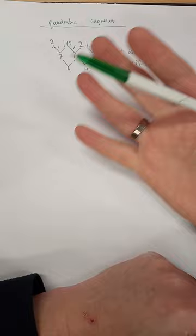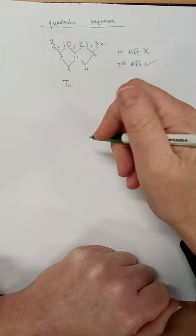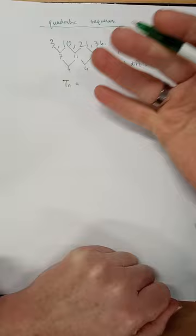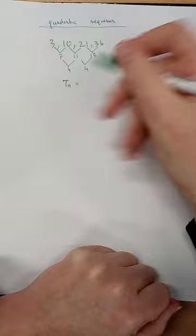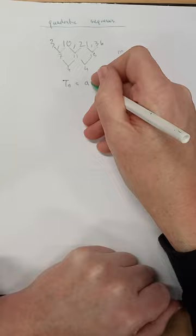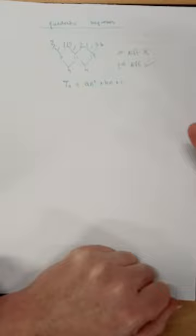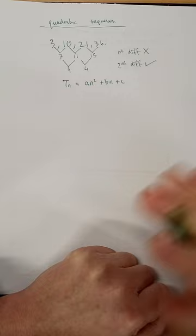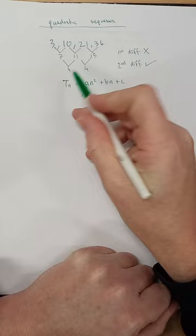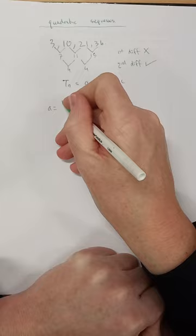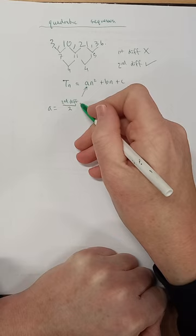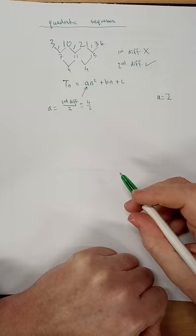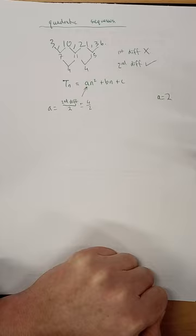The log tables don't give you the nth term formula for a quadratic, but a quadratic always takes the form an² + bn + c — using n instead of x. Here a, b, and c are specific numbers we need to find. We find a first: a always equals the second difference divided by 2. In this case that's 4 divided by 2, so a equals 2.